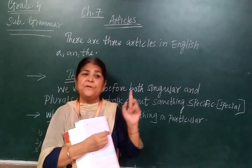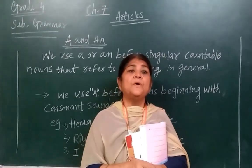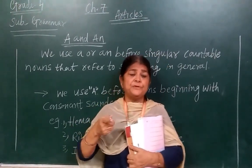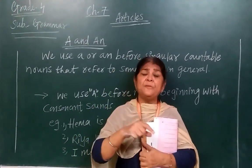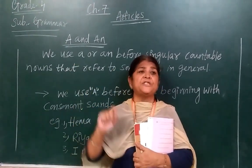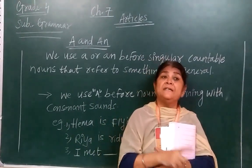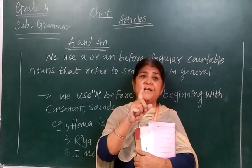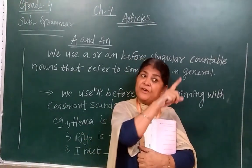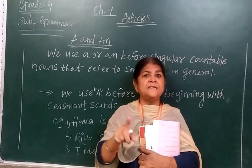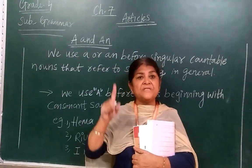Taj Mahal is in Agra. Now I am going to teach you about A and An. For more examples with 'The': the sun rises in the east. Because the sun is only one, we write 'The' before sun. The sun rises in the east — and we also write 'The' before east, because east is also one of only four directions.